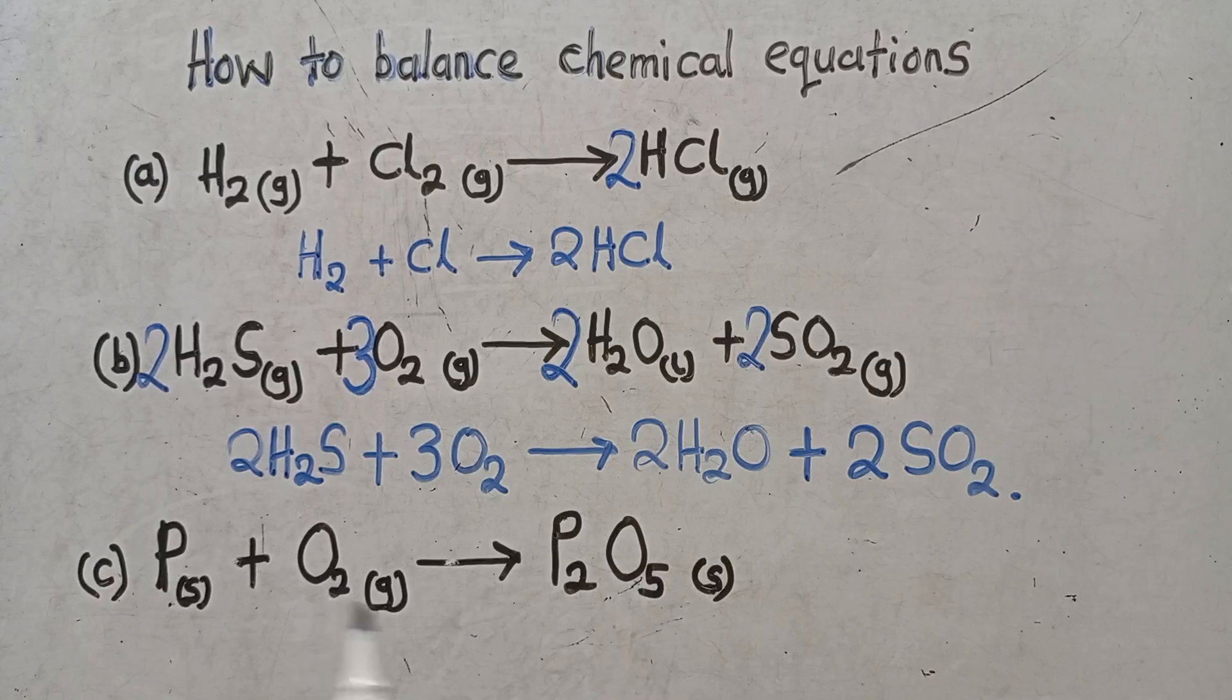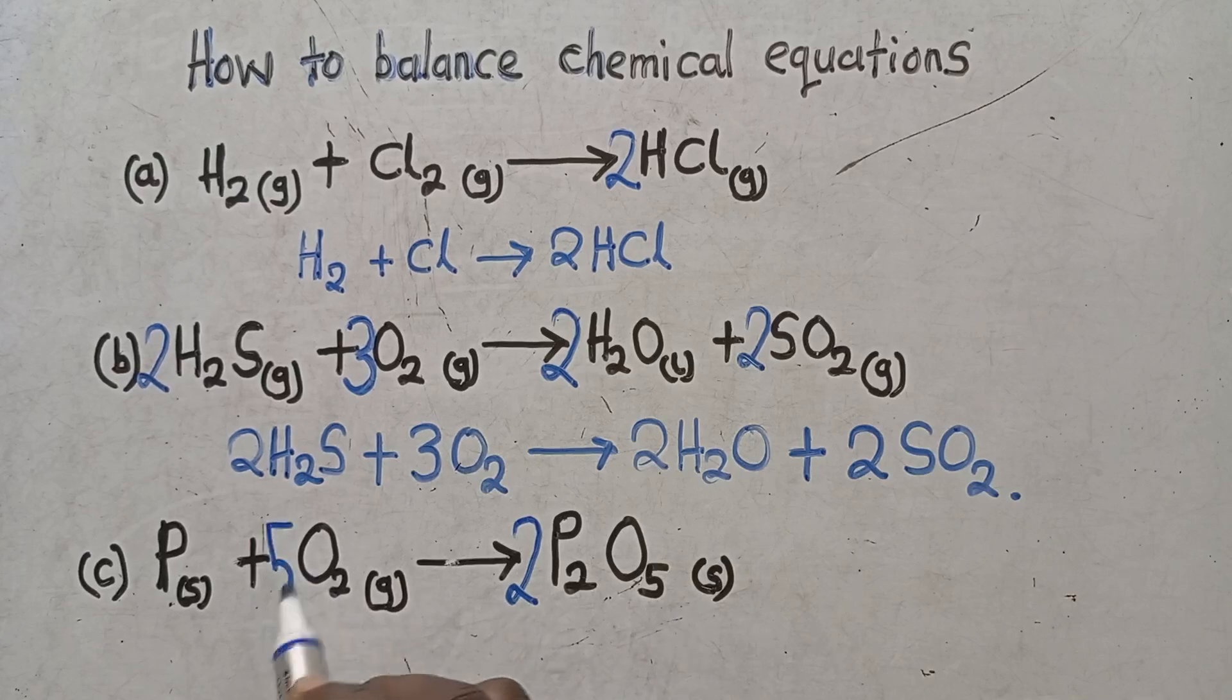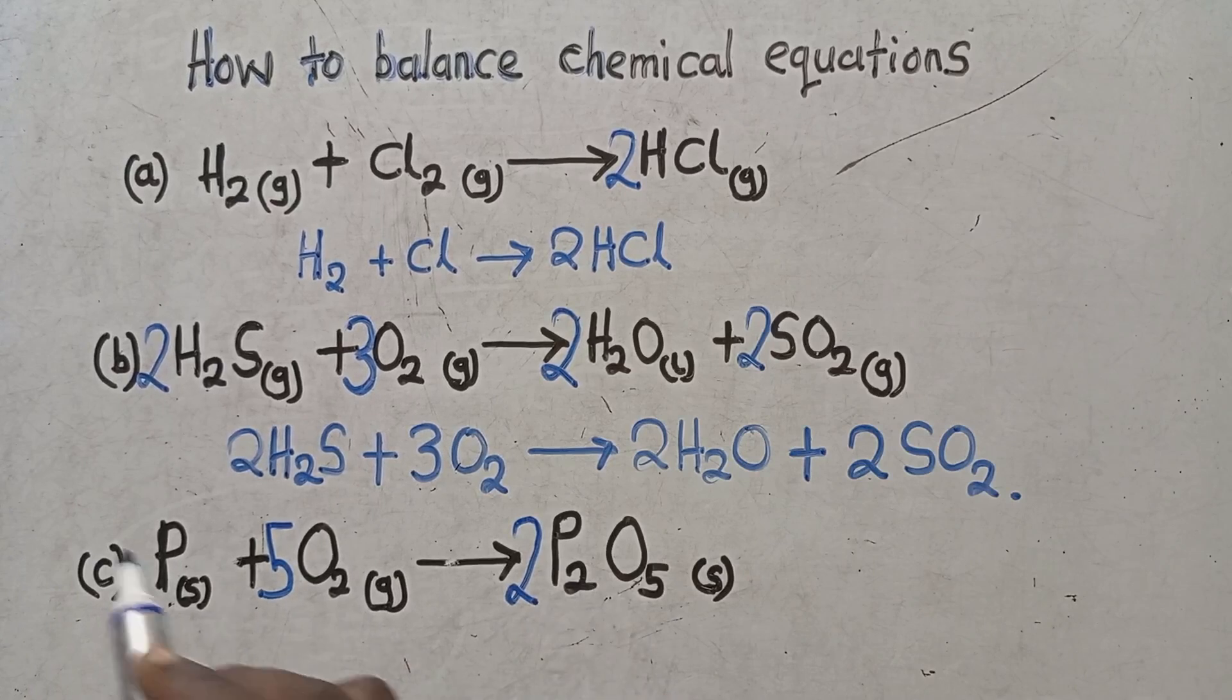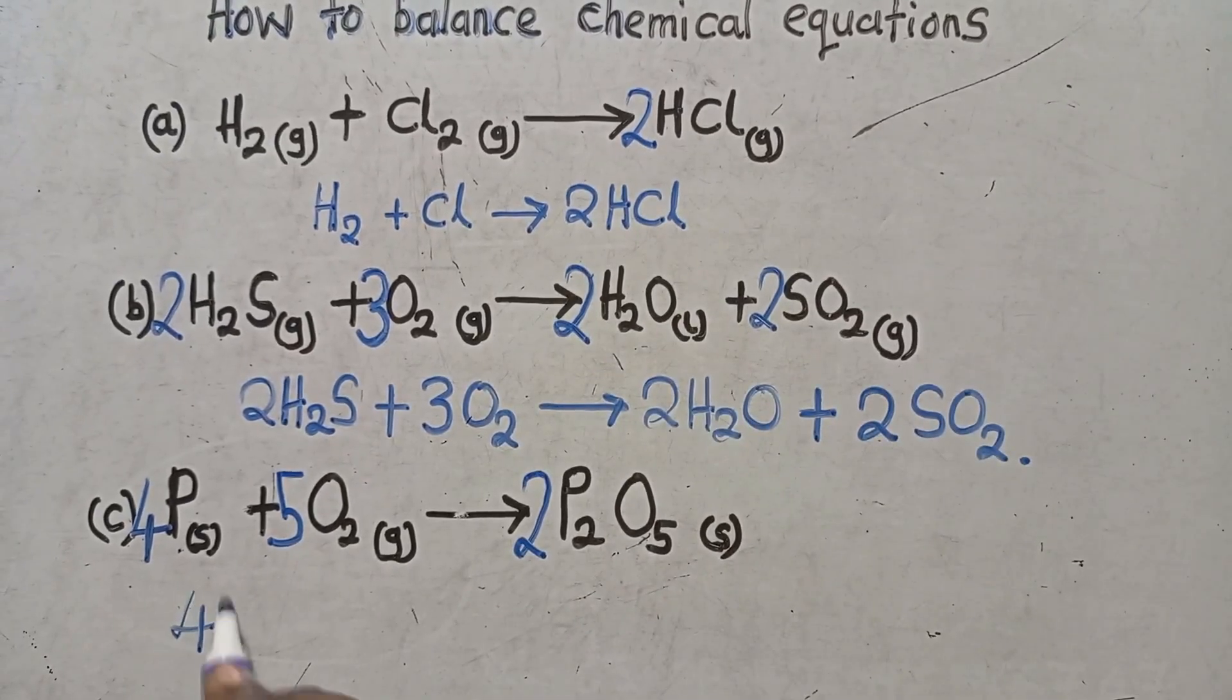The phosphorus: two, phosphorus one. This one here five. This one, we've got two. So this is two, this is five. So I put a two here so that it becomes ten. Here I put a five. Oxygen is balanced. This is four. I just need to put a four here.